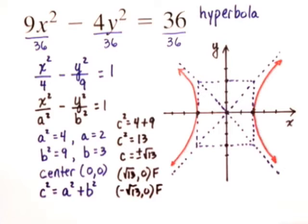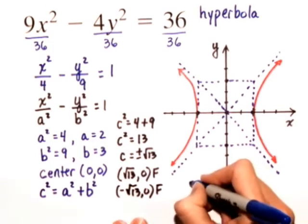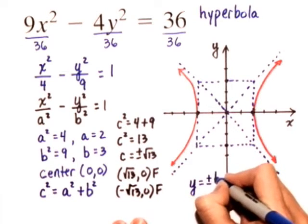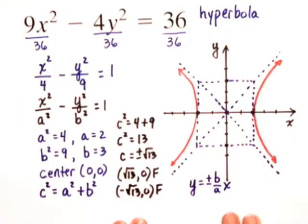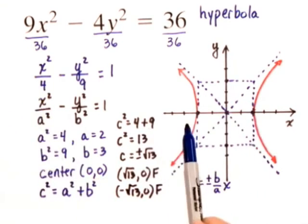Now, we're asked for one more piece of information. We want the equations for the asymptotes. So, we have asymptotes that are of the form y equals plus or minus b over a times x. We always use these equations for asymptotes, y equals plus or minus b over a times x, when our x squared term has a positive coefficient. In other words, when the branches of the hyperbola cross through the x axis, this is the equation that we use.